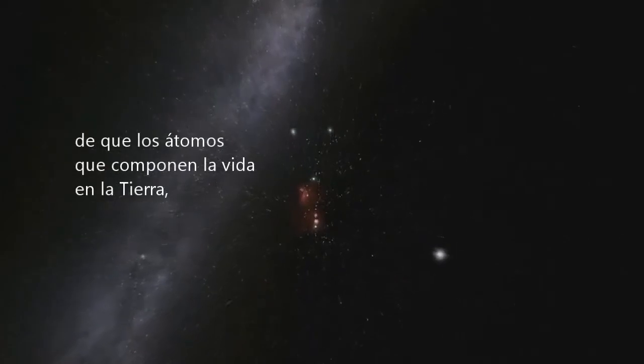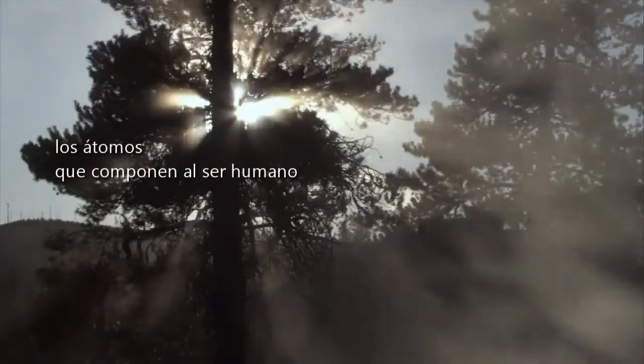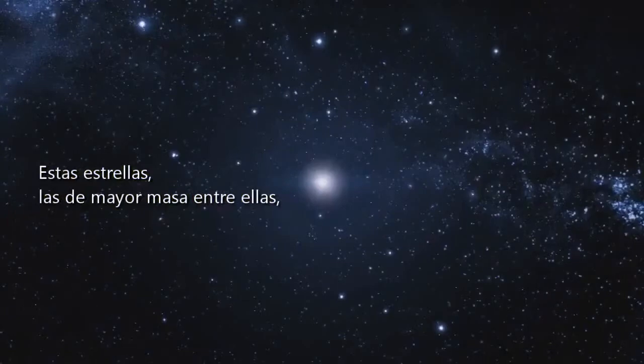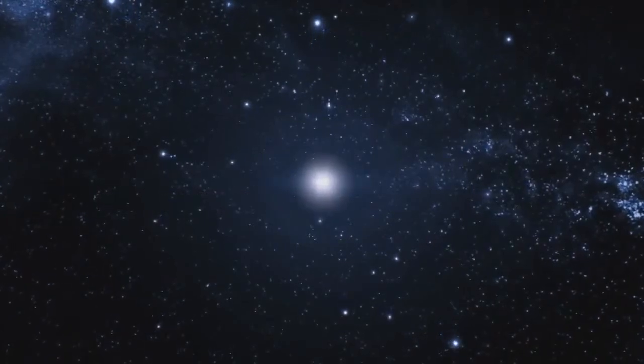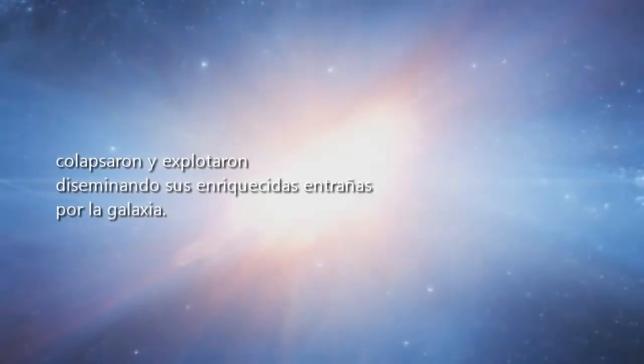That the atoms that comprise life on earth, the atoms that make up the human body, are traceable to the crucibles that cooked light elements into heavy elements in their core under extreme temperatures and pressures. These stars, the high-mass ones among them, went unstable in their later years. They collapsed and then exploded, scattering their enriched guts across the galaxy.